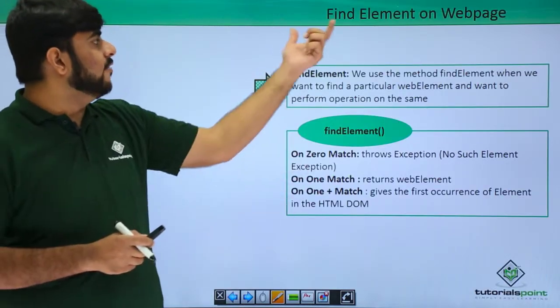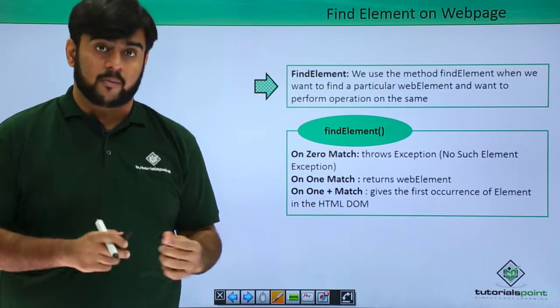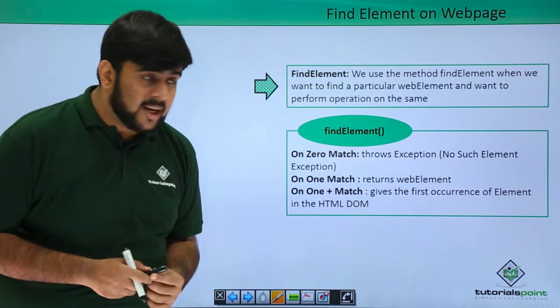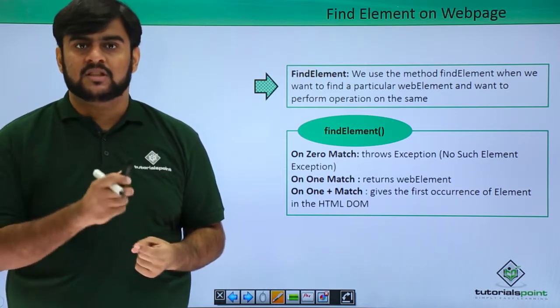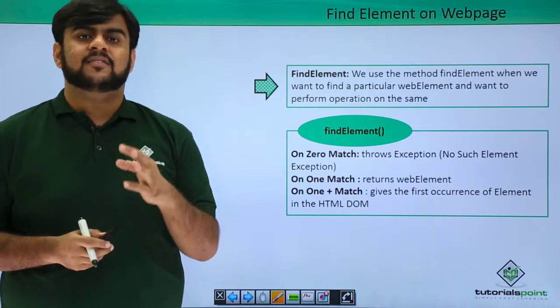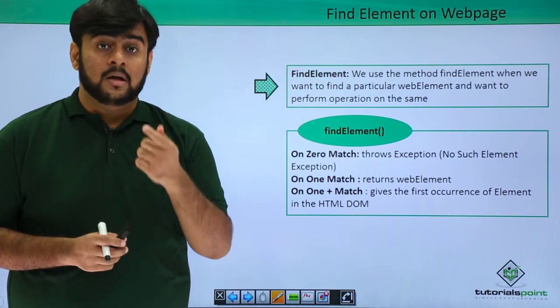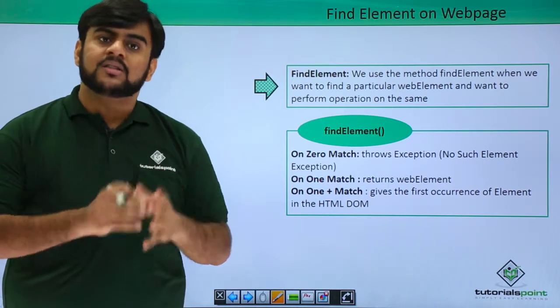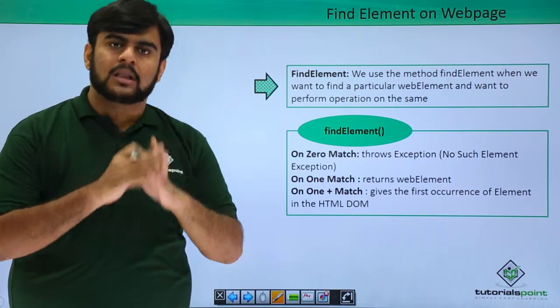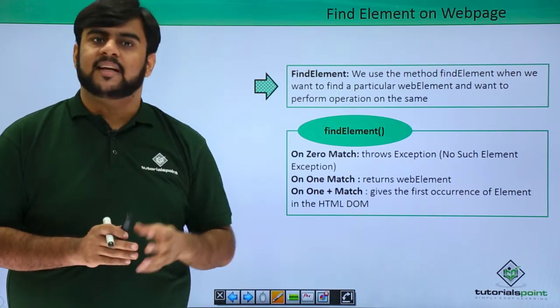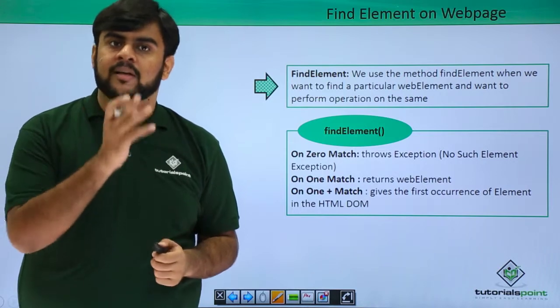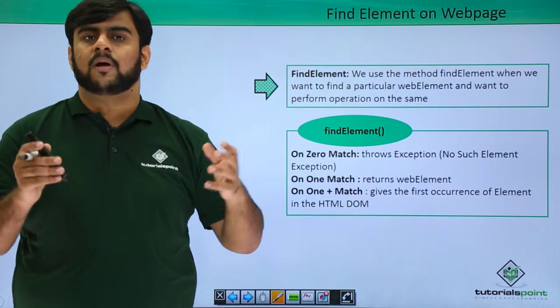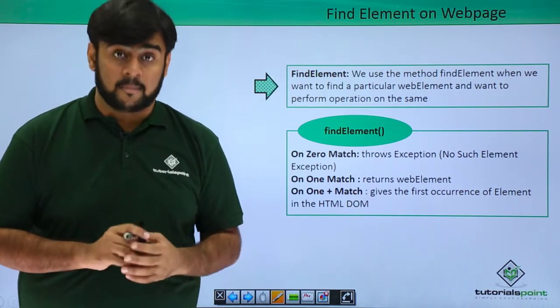So, the first way is in which we find a web element on a web page. We have a functionality called find element and this function will return an object of the type web element to us. On this web element, we can perform all the properties like fetching the text of the property, clearing the text of the property, and sending keys to the particular web element. All these things can be done.